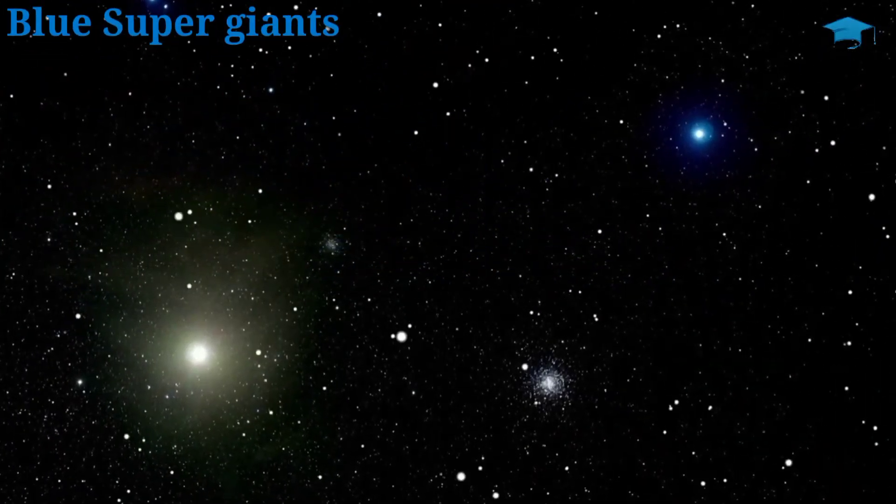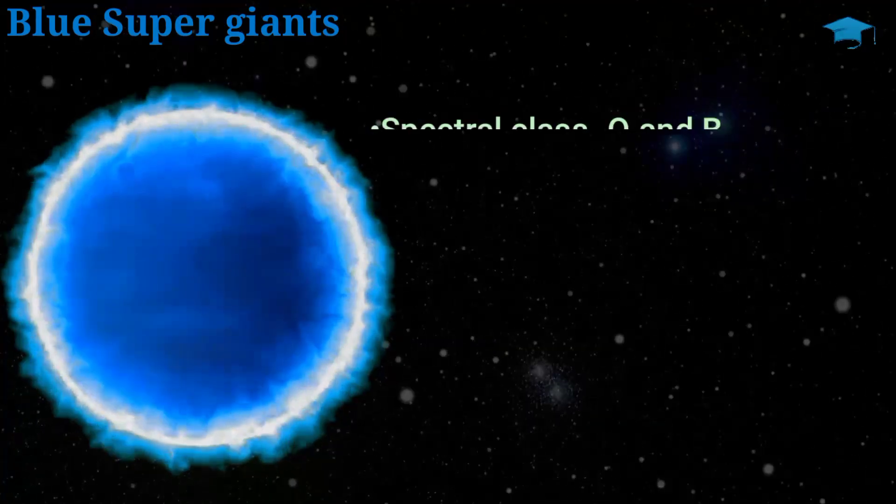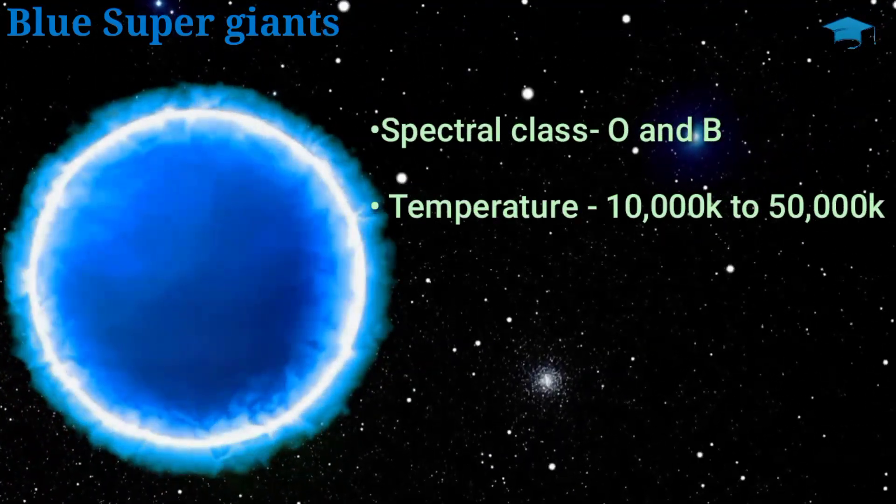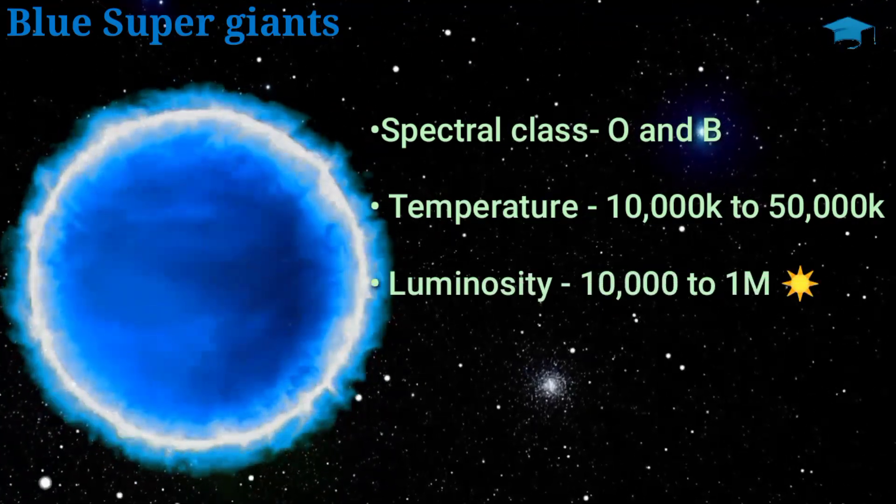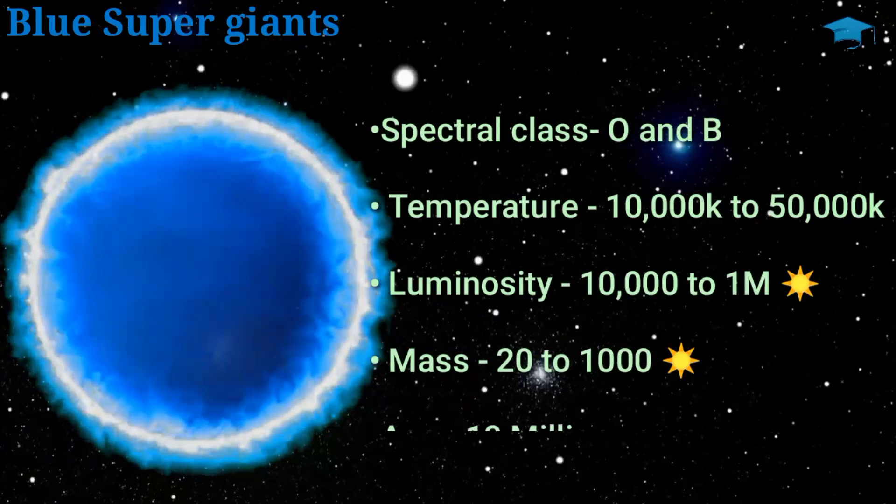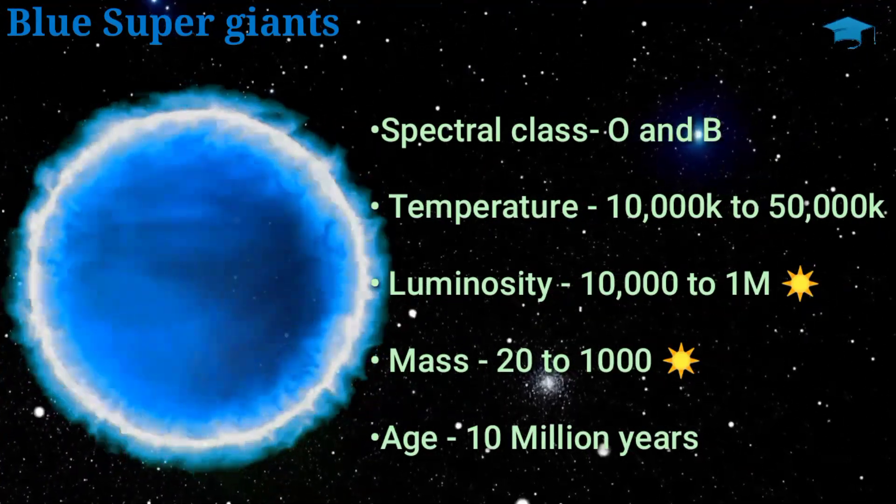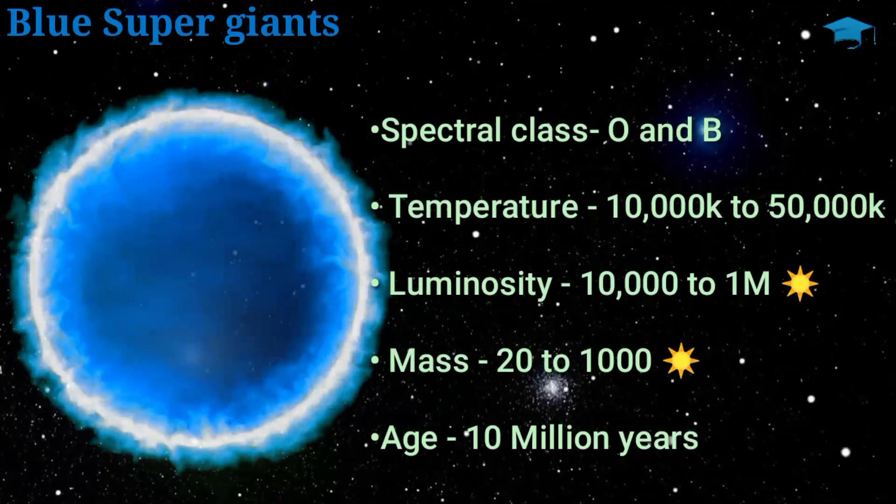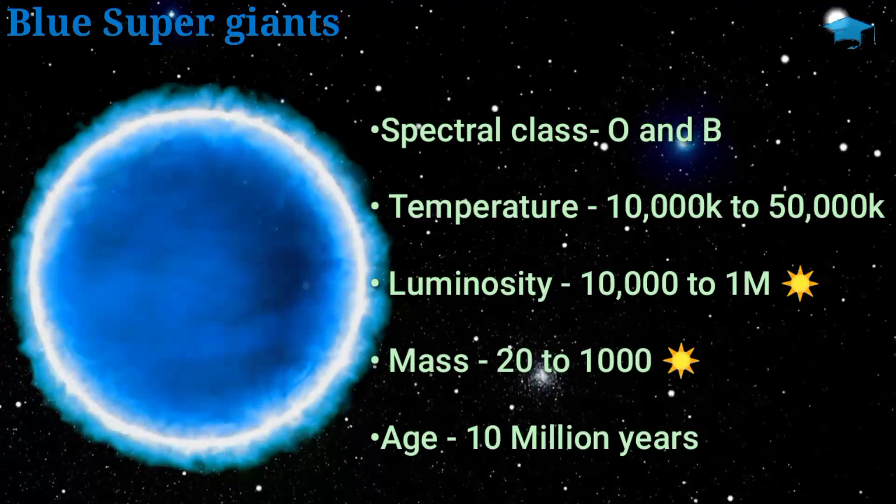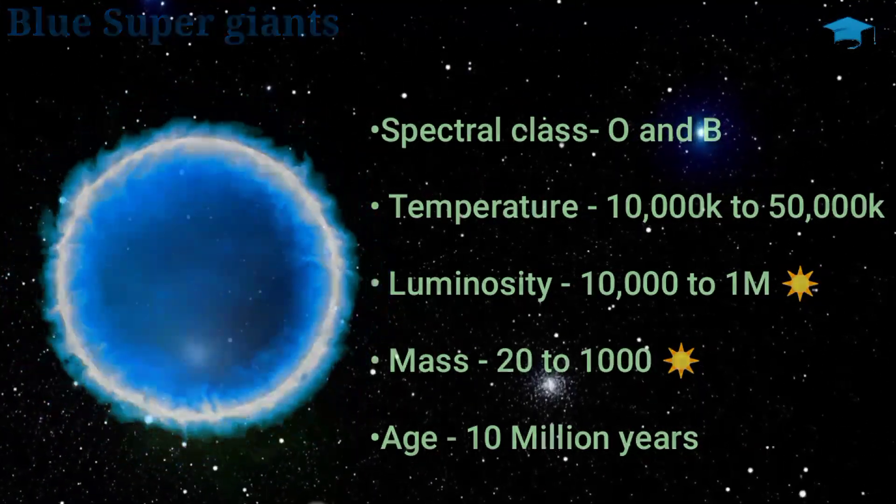Now comes blue supergiants. These stars are also really rare with the spectral type of O and B. Their temperature ranges from 10,000 Kelvin to 50,000 Kelvin and luminosities of around 10,000 to 1 million times that of sun. They have a mass of around 2 to 200 times that of our sun and these stars have a short life of around 10 million years. And it is because of their extreme mass that they quickly burn their hydrogen supplies.